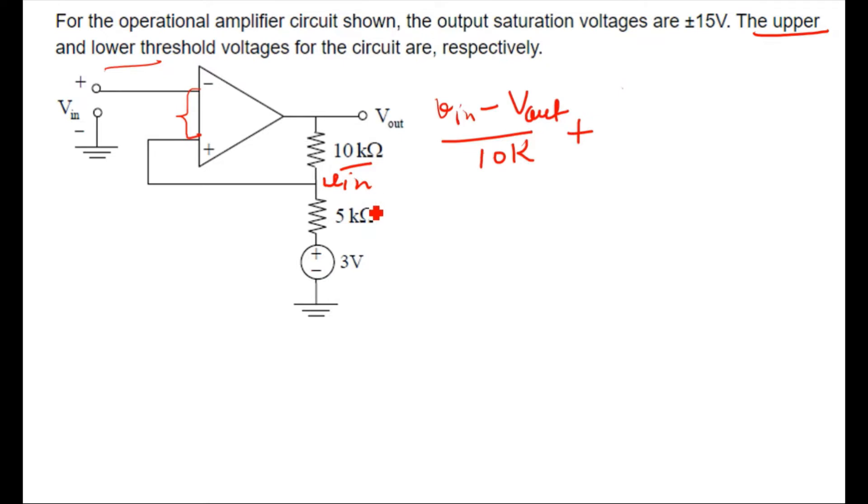V_in minus V_out divided by 10k, this one, plus V_in minus 3 volts divided by 5k. V_in minus 3 volts divided by 5k, and this will be equals to zero. Because for the nodal analysis, summation of all the outgoing currents will be zero.